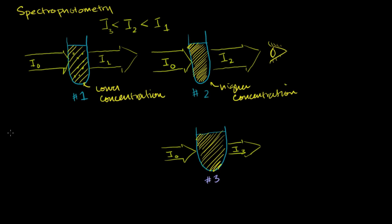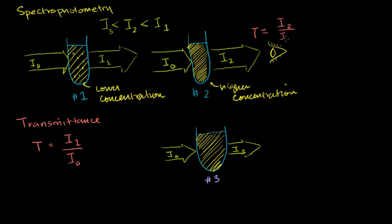The first thing I will define is transmittance. What we care about is how much is transmitted versus how much went in, so let's define transmittance as that ratio. The transmittance of number one would be I1 over I0 — the amount that got through over the amount you put in. The transmittance of number two would be I2 over I0. As we see, this will be a lower number — I2 is lower than I1 — so number two has a lower transmittance than number one. Transmittance three is I3 over I0, and this is the smallest number. So number three has the least transmittance — it's the most opaque — followed by number two, followed by number one.